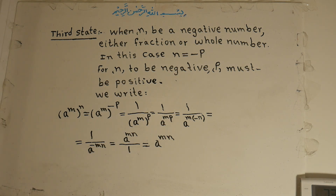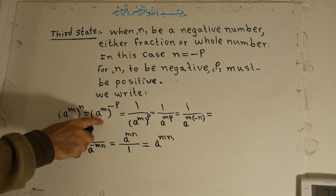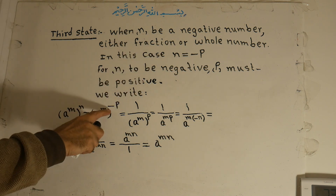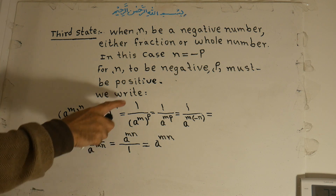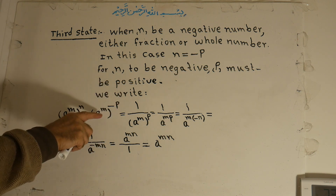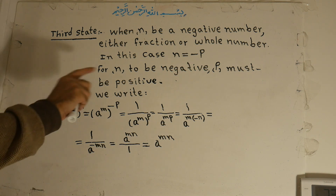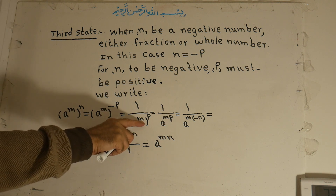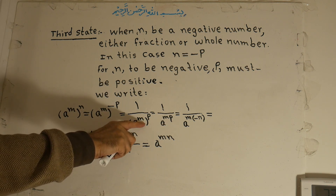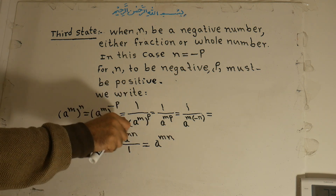We write a to the power of m, all to the power of n, equals a to the power of m. Instead of n, we write negative p, or minus p. When a number has a negative exponent, we take its inverse — meaning we write 1 over a to the power of m, all to the power of p, to make the negative power positive.